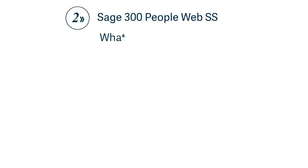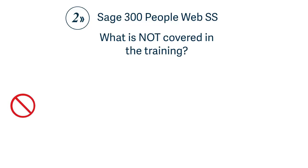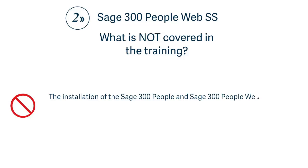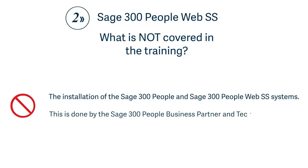What is not covered in the full training? The installation of the Sage 300 People and Sage 300 People Web SS systems. This is done by the Sage 300 People business partner and technical teams.